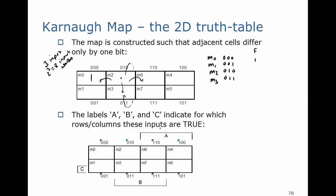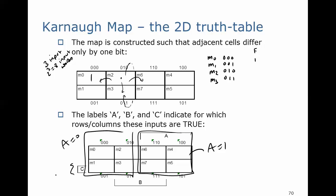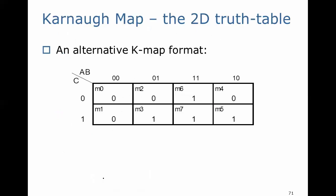The Karnaugh map labels A, B, and C indicate when those inputs are true. One side is when A is true, the other when A is false. One row is when C is true, the other when C is false. B is also labeled across the columns. Another way to show the Karnaugh map has inputs A, B, and C labeled in the corner, with their values going across the top in gray code order — 00, 01, 11, 10 — so only one bit changes between adjacent columns.